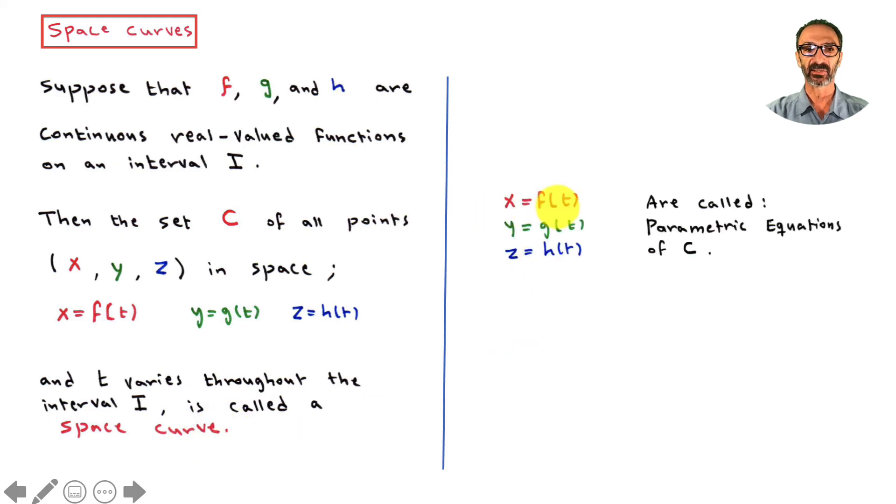We have x = f(t), y = g(t), and z = h(t), which are called parametric equations of C, and t is called the parameter.